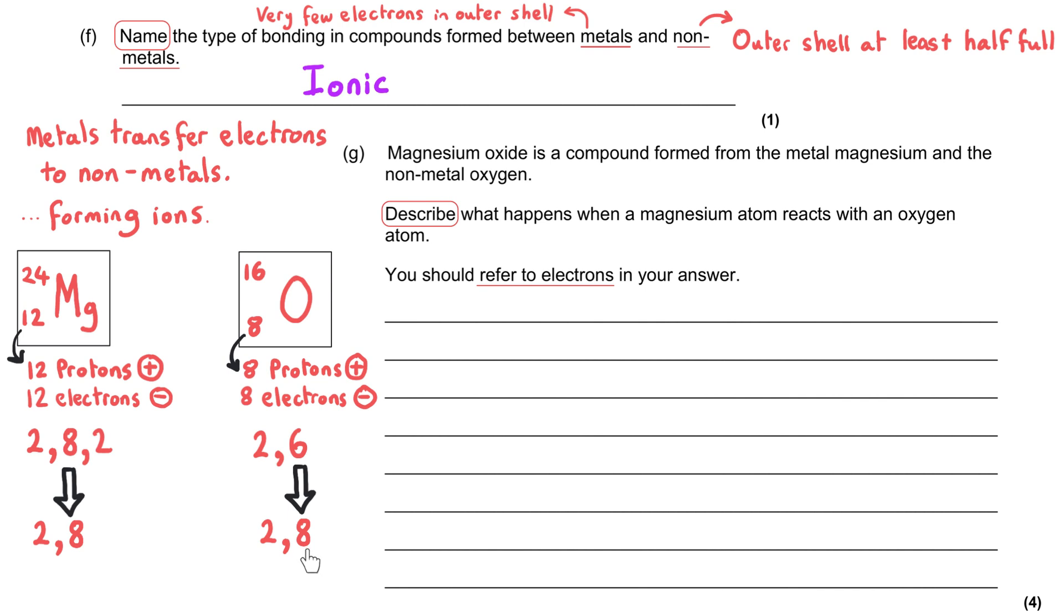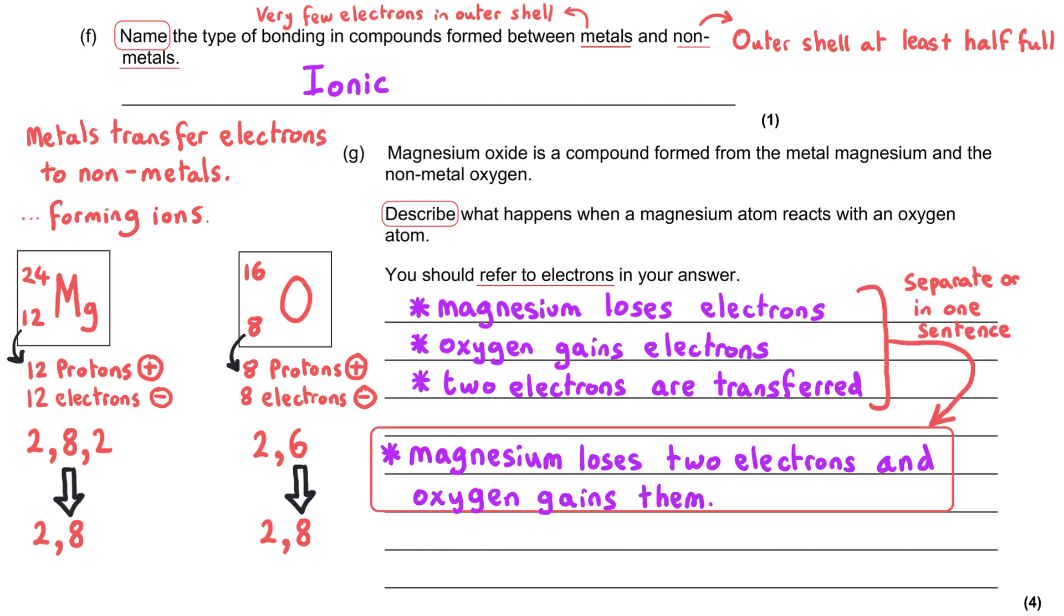And so to connect these ideas together, we need to say that the magnesium loses electrons, and the oxygen gains electrons. There's a mark for each of those ideas. We also need to recognize that it's not just one electron being gained, but actually it's two electrons that are being gained by the oxygen and lost by the magnesium. So I'm showing these as separate ideas, but you could actually get all three marking points from saying that magnesium loses two electrons, and oxygen gains those two electrons. So the one sentence actually gets you three marks.